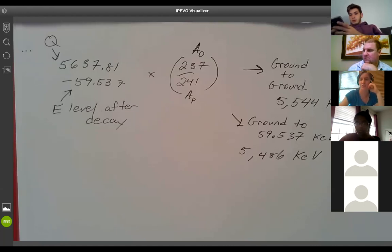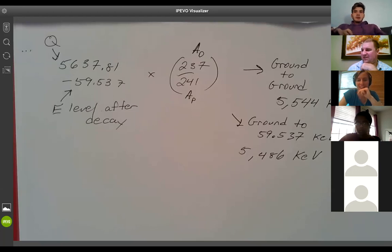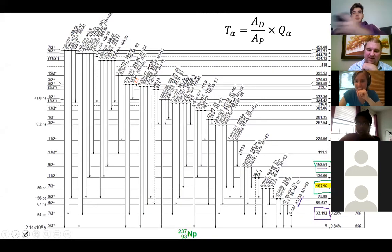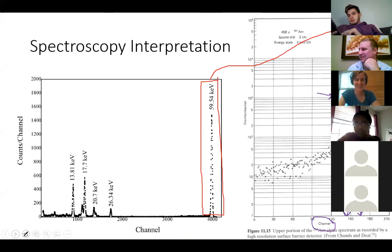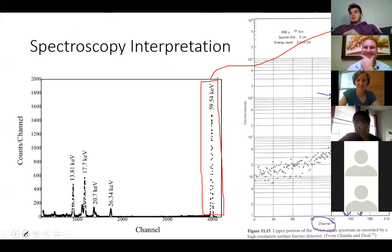There is a brief interruption as the instructor realizes the screen share was not showing the correct window. Students were not seeing the diagram being discussed. The instructor apologizes and switches back to the correct view, confirming with students what they were and weren't able to see during the explanation.